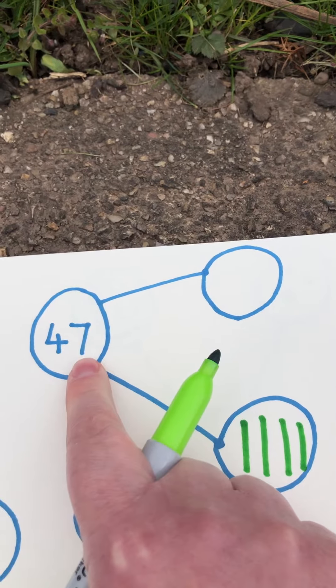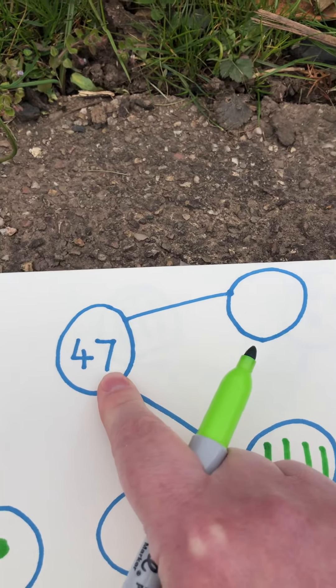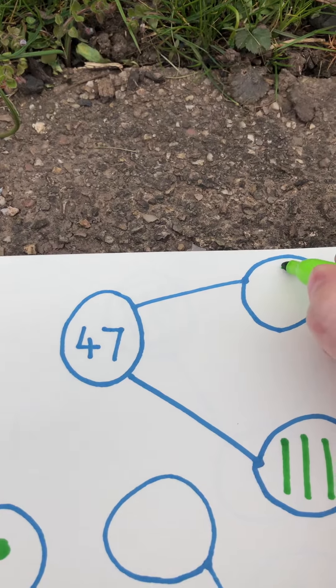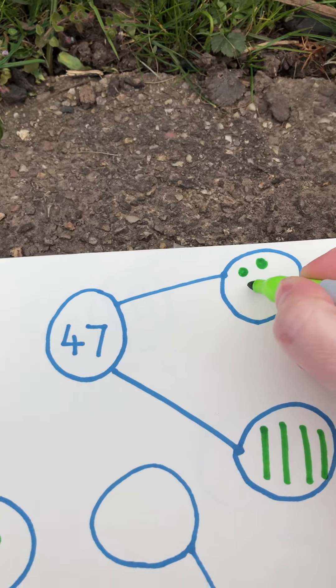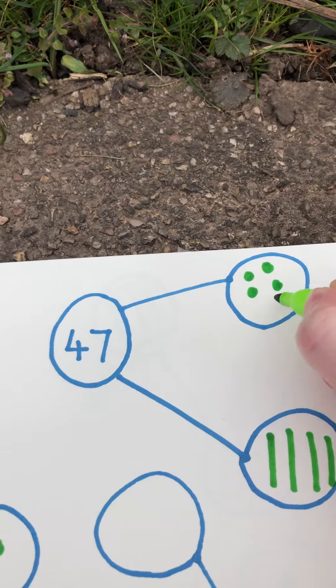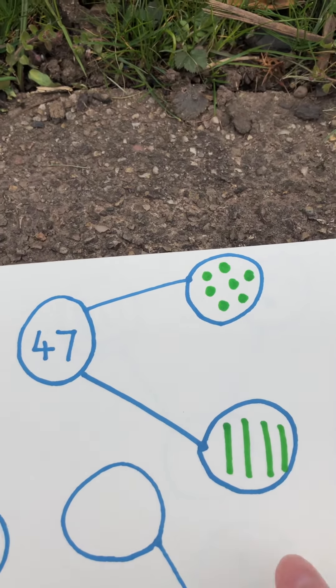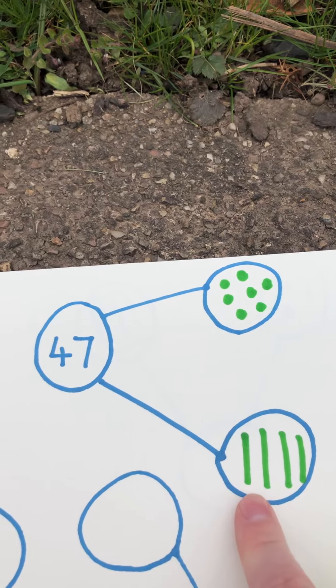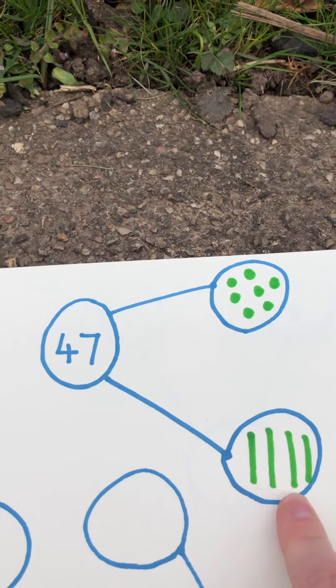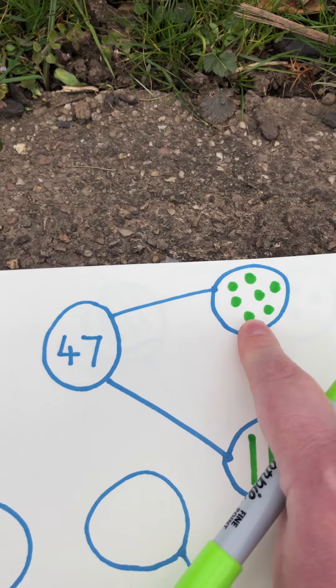We have 7 ones. So remember, we're using a circle to represent the 1's. So I'm going to do 1, 2, 3, 4, 5, 6, 7. So we have represented 47 using tens rods and 1's.